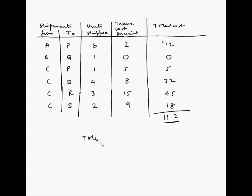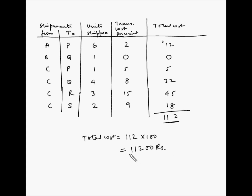The total cost comes out to be 1,120 — however, this unit cost is in hundreds of rupees, so we multiply by 100 and the total cost is 11,200 rupees. A point to be noted here is that using the northwest corner method for the same example, we had obtained the total transportation cost as 11,600 rupees. Using the least cost method, we have obtained a total cost of 11,200 rupees, which is a saving of 400 rupees over the northwest corner method.